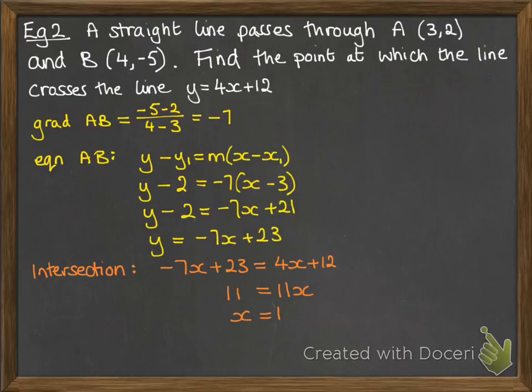X is 1. Substitute it back in. We put that 1 into 4x plus 12. 4 times 1 is 4 plus the 12 gives us y equals 16.